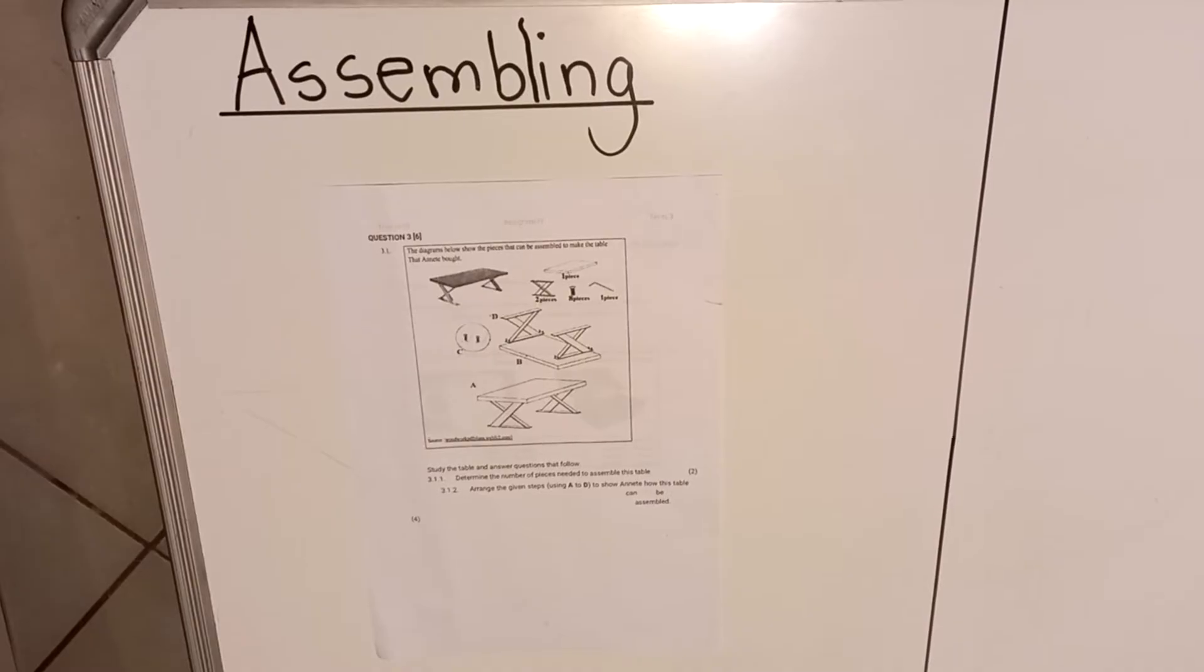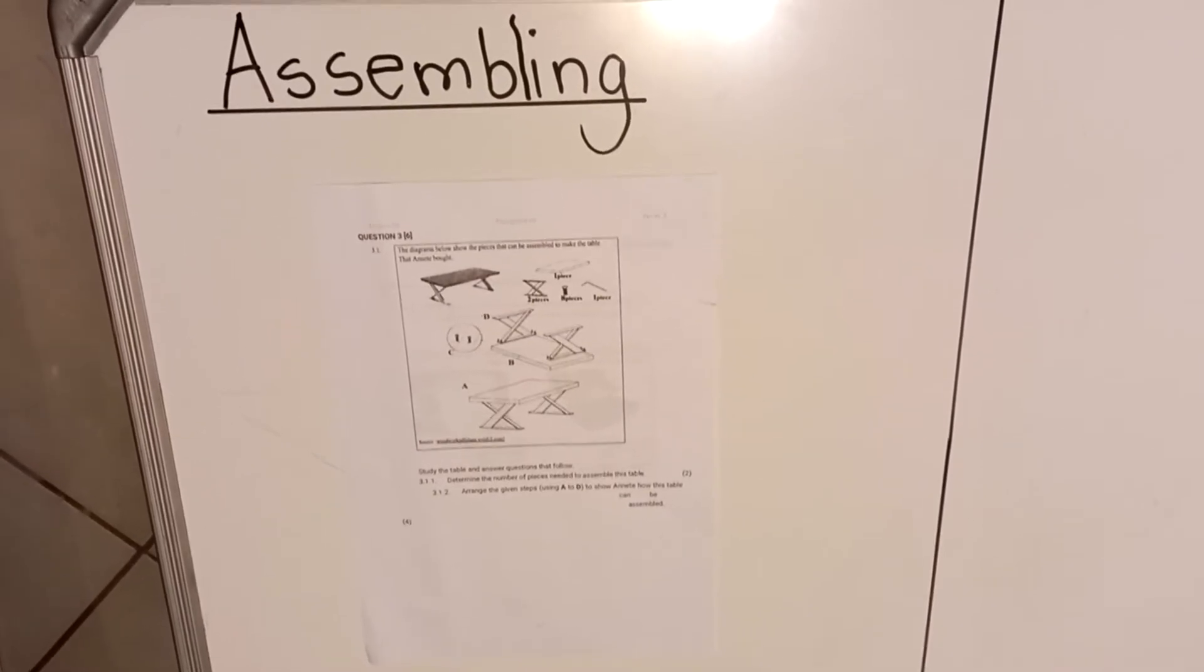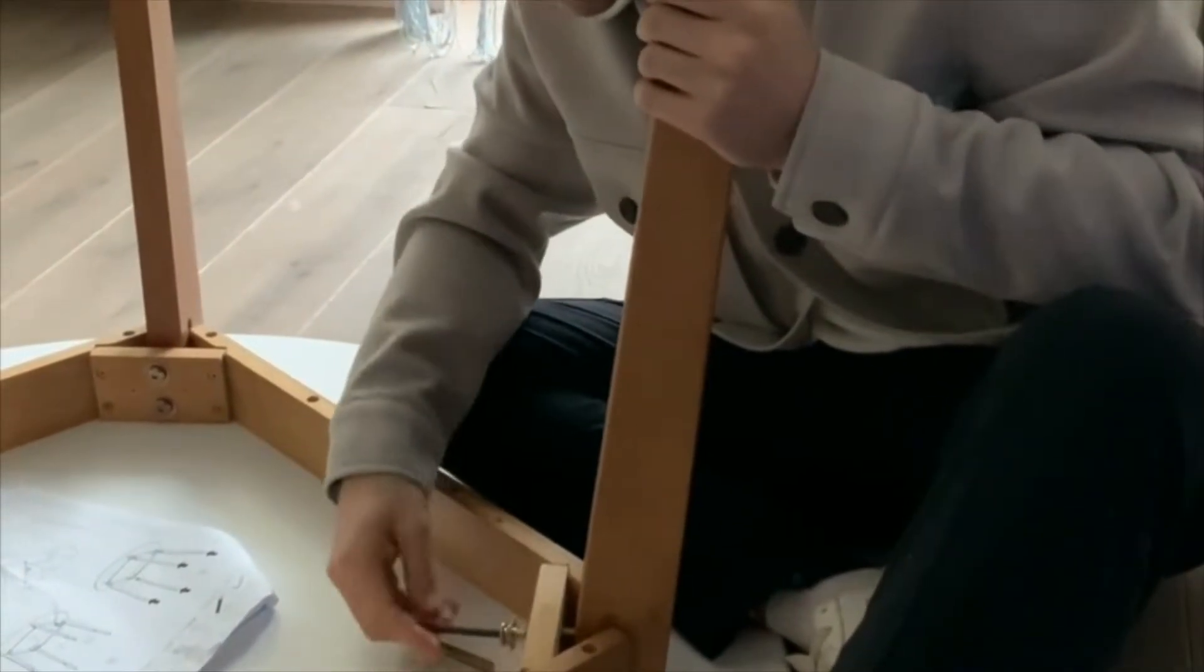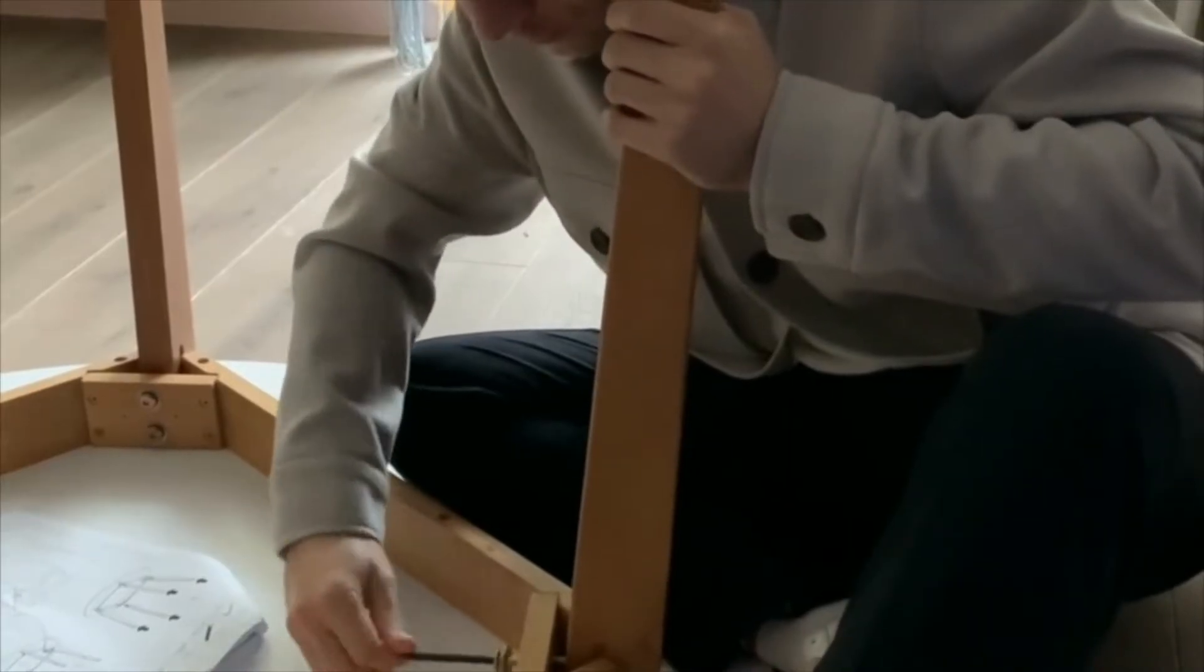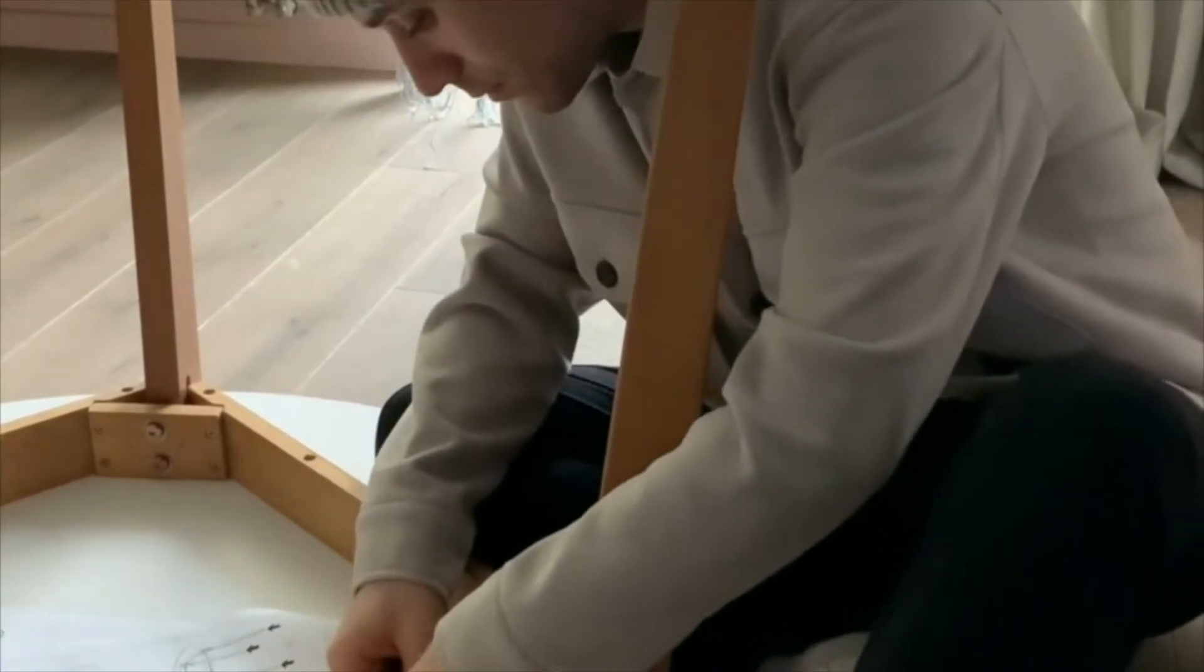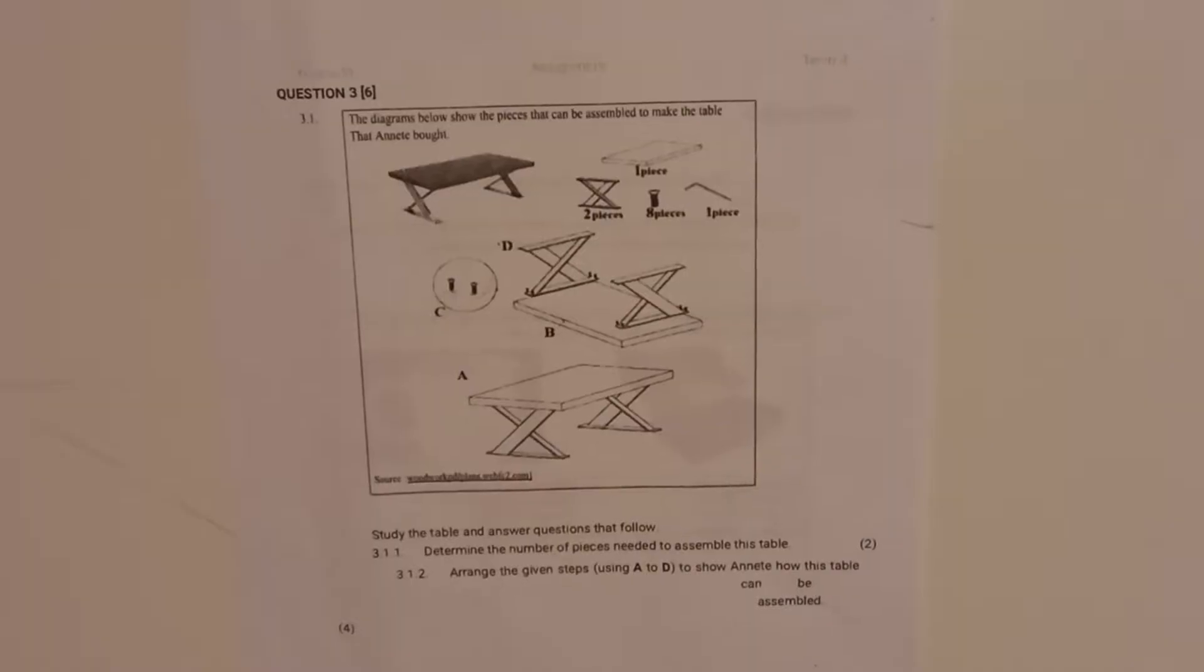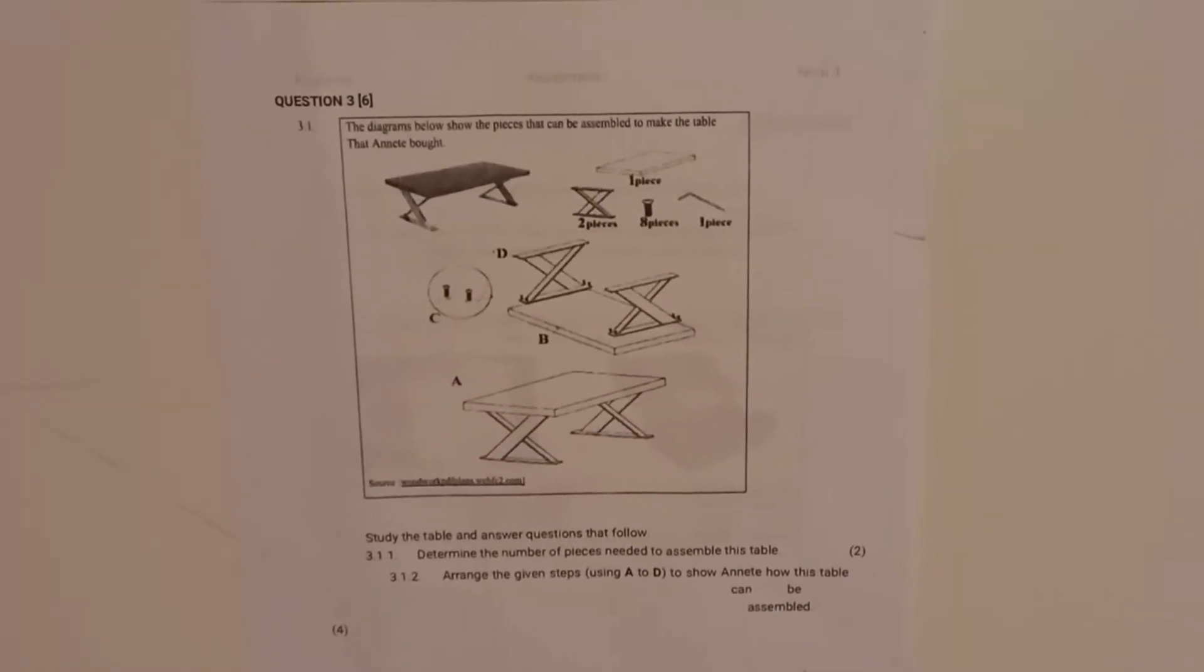Hello everyone, this is a video on assembling. To assemble is to put things together. We're going to use a question paper where they've given us drawings to assemble a table. Usually when you buy things in a shop, sometimes they give it to you in small packs, not assembled - the legs alone - and then you have to put it together. This activity is intended to teach you how to assemble when you get a box like that. So we're going to look at this example.